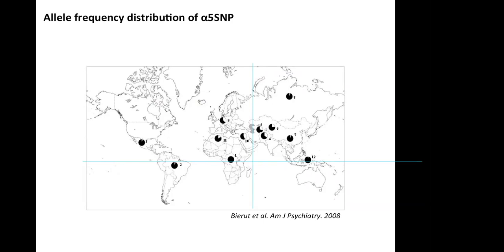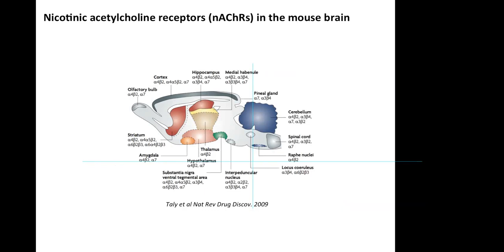The alpha-5 nicotinic subunit is expressed in multiple brain areas. My studies focus on the cortex and more specifically the prefrontal cortex, where we have alpha-4, beta-2, alpha-5, and alpha-7 nicotinic subunits. These subunits can assemble in pentameric combinations forming different homopentameric or heteropentameric receptors, and this broad diversity in distribution also implies functional differences among different nicotinic receptors.